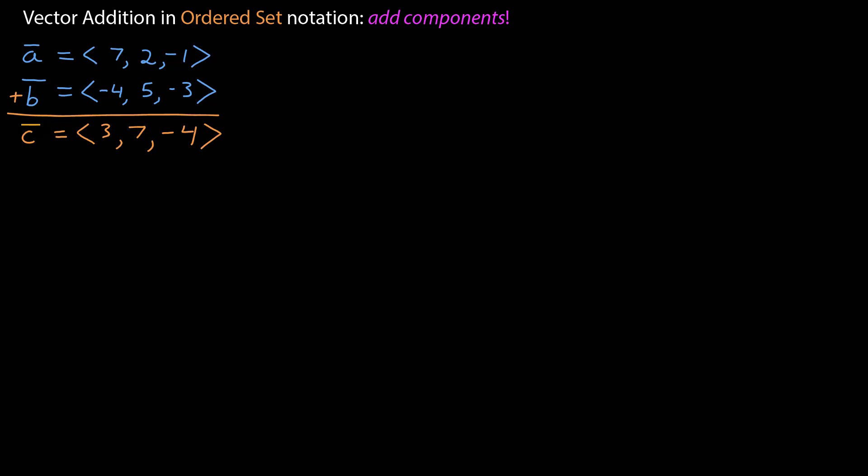7 minus 4 is 3. 2 plus 5 is 7. Negative 1 plus a negative 3 is negative 4.